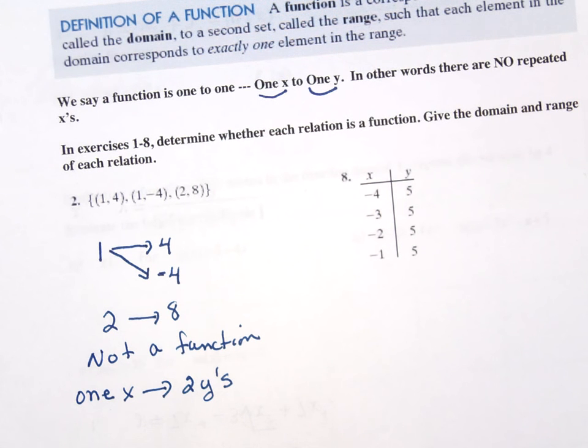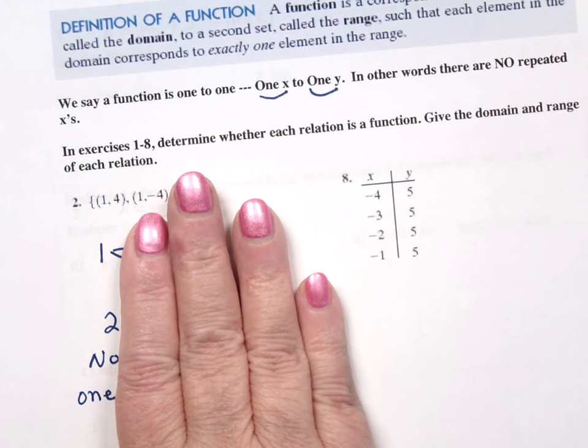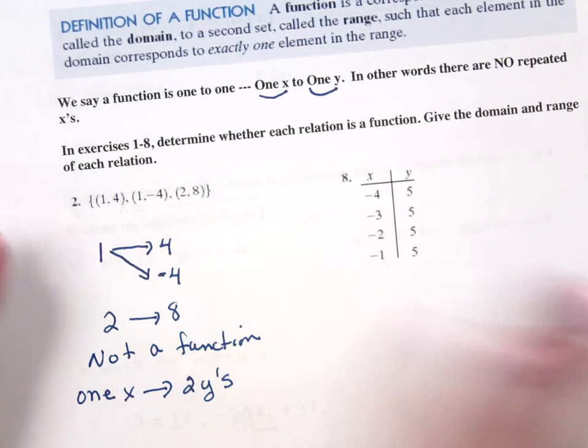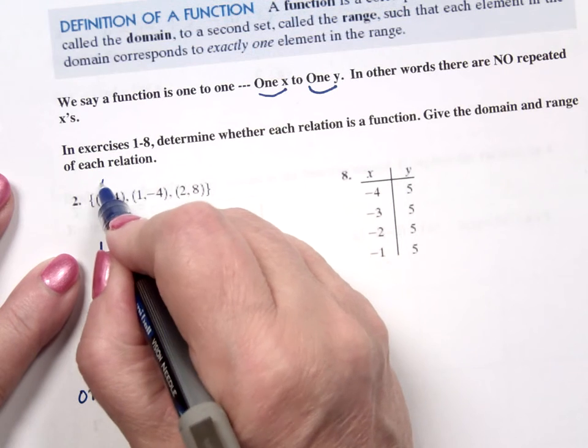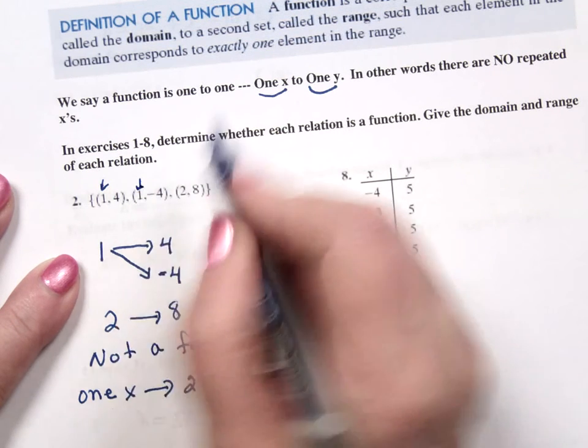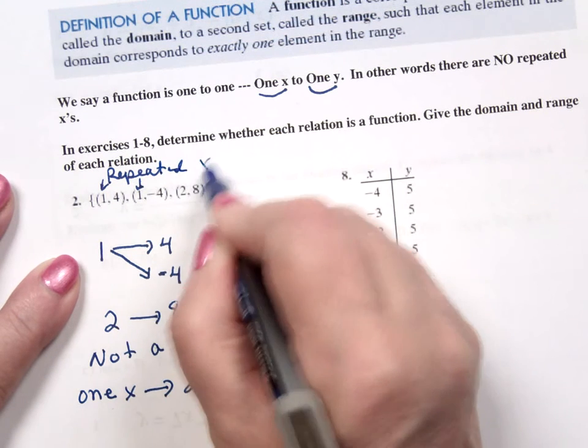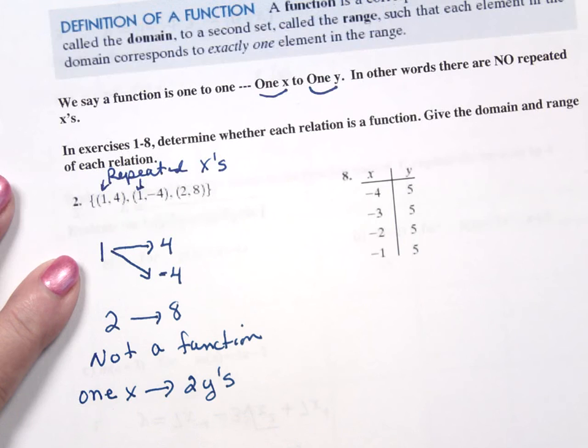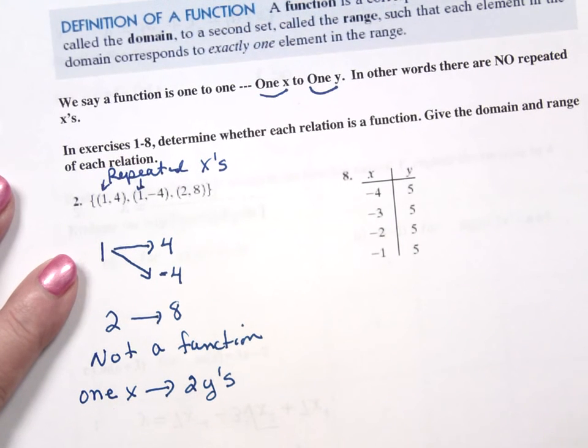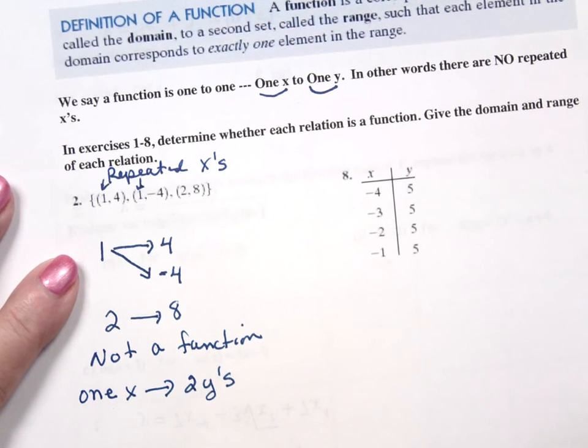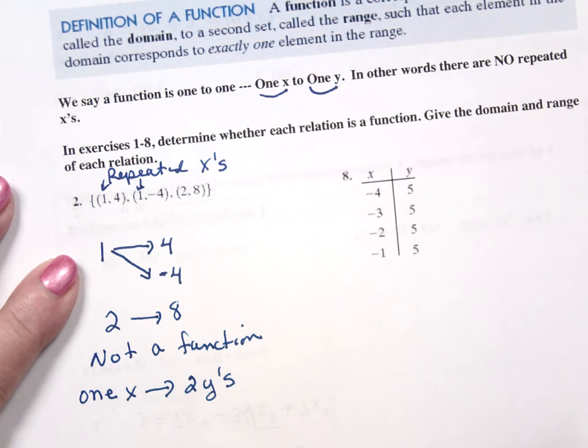A function means you're going to take one package and deliver it to one place. It is one to one. So it's got a one to one matchup. In this case, I've got one package, and I'm going to have to try to deliver it to two places. Ain't going to happen. Not a function. That would also mean that if I'm looking at a set, this means I have repeated x's. X appears in the list more than once. So it can't be a function.